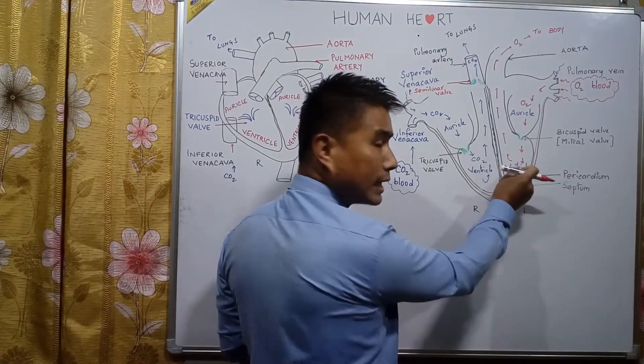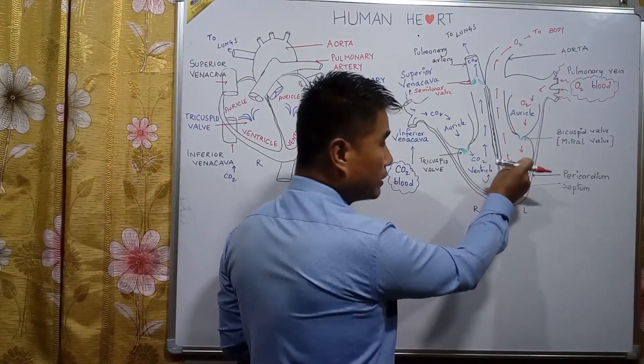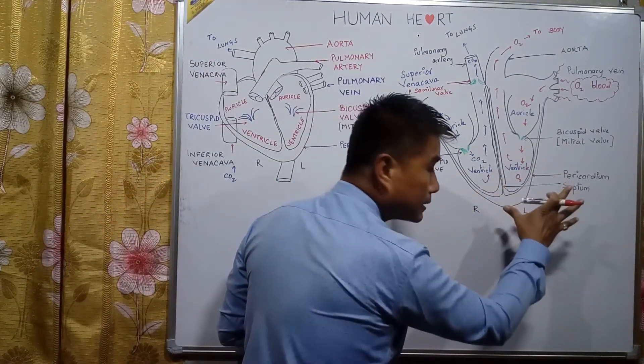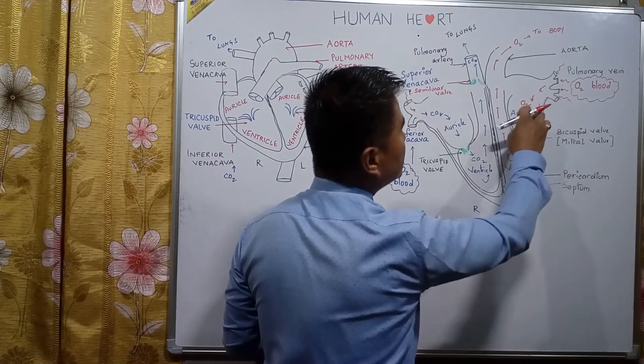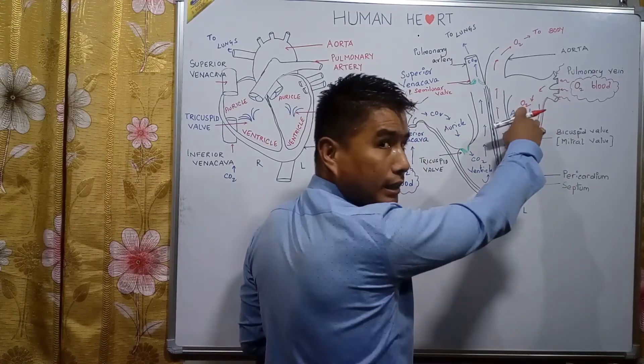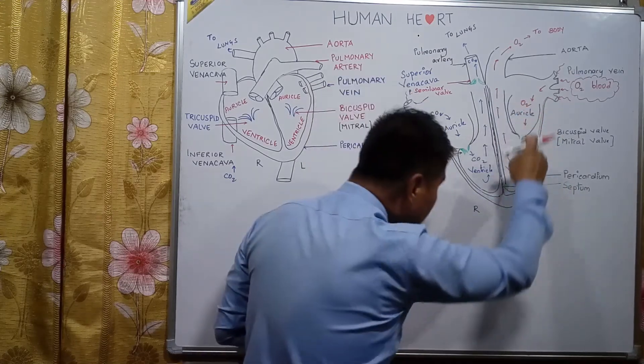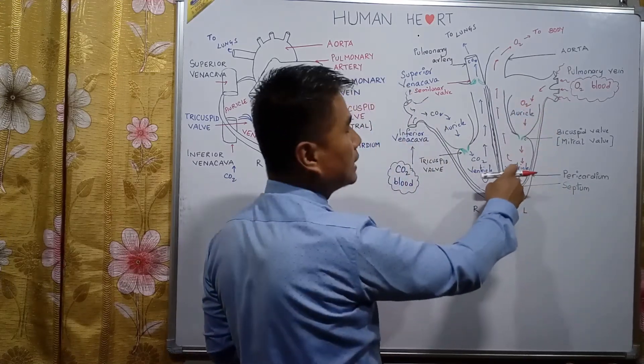When the ventricle contracts the blood exits through the aorta; when the ventricle expands again, oxygenated blood rushes down from the auricle to the ventricle.